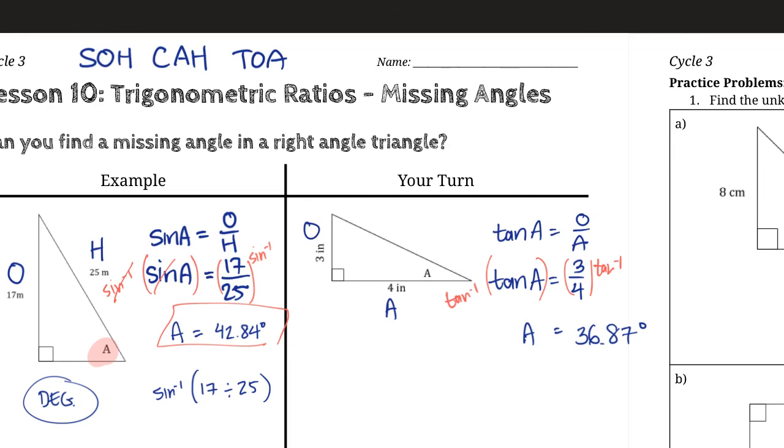And tan is opposite over adjacent, so that's why I wrote that. Then I plugged in 3 and the 4 for the opposite and the adjacent, and then I took the tan inverse of both sides. On the left side, the tan inverse cancels out with the tan. That's the reason why we do it. So we're just left with A, and on the right side, tan inverse of 3 over 4 is just 36.87. And that's it. That's the answer.